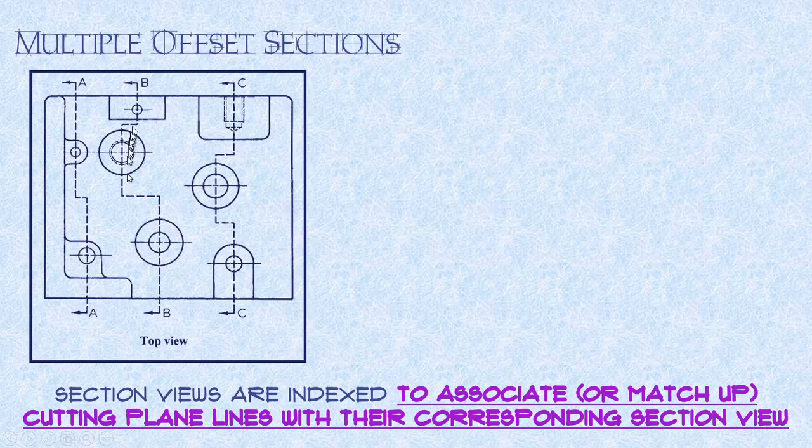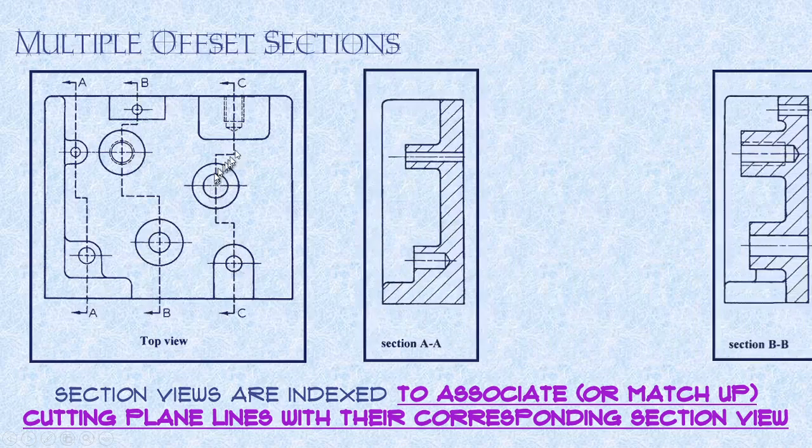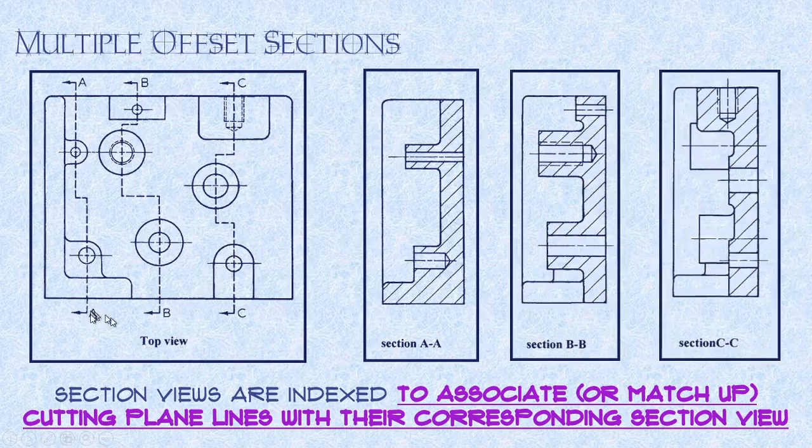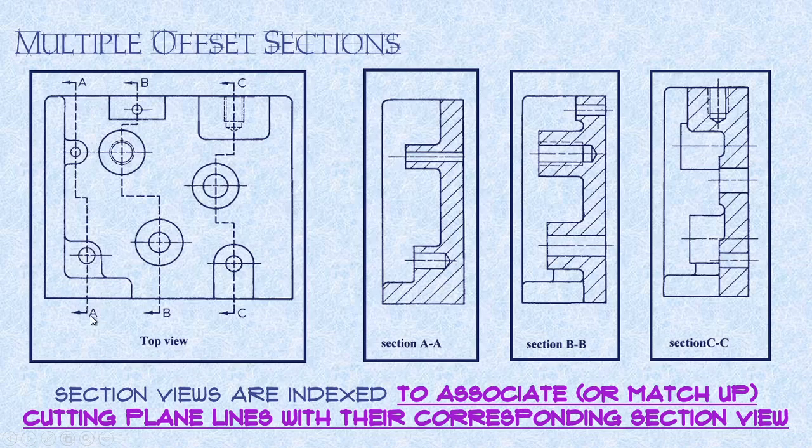When we're dealing with multiple offset sections, so here we have a shape we've cut through here, and then we've cut again through this section here, and then we've cut again through this section here. And you can see we can jog all kinds of different directions. What we have to do is to index those sections. So what we have is we index AA, and we put the letters will go on each side of this. So letter AA or section AA, and we'll index it by identifying it in the section view as AA, BB, CC.